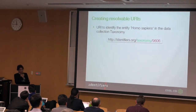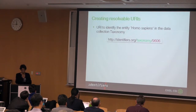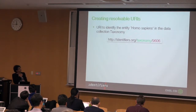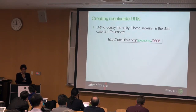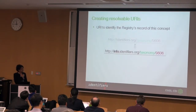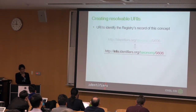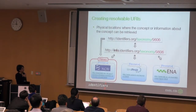So how do we make them resolvable? This URI identifies the entity Homo sapiens in the original data collection. Then we have an 'info' subdomain which identifies the registry's record of this concept.